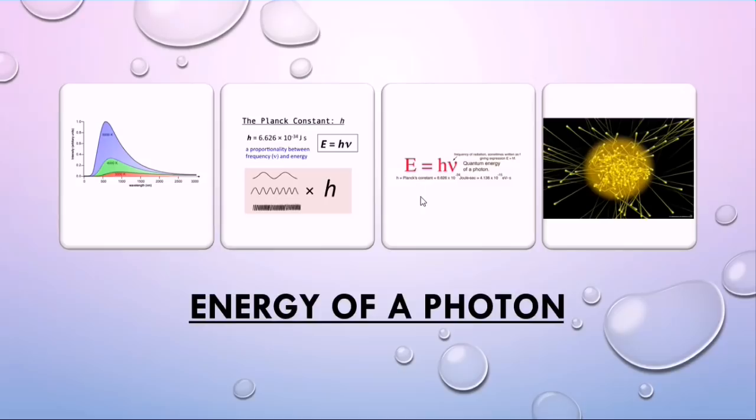That is, energy is emitted in discrete form. He said that E is equal to H nu, where H is Planck's constant and its value is 6.63 into 10 raised to the power minus 34 joules into seconds.